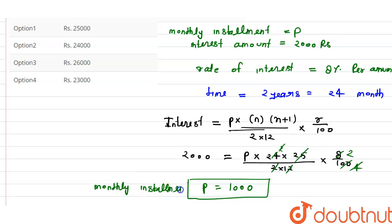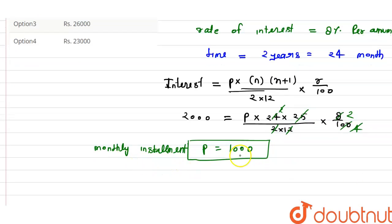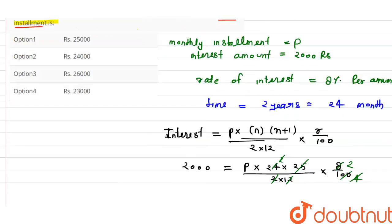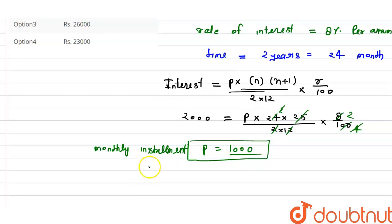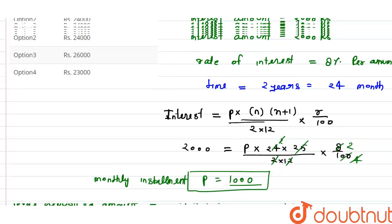Now we calculate the total amount deposited in the bank. The monthly deposit is 1000 rupees and the account runs for 2 years, which is 24 months. So the total deposited amount is 24 into 1000, which equals 24,000 rupees.